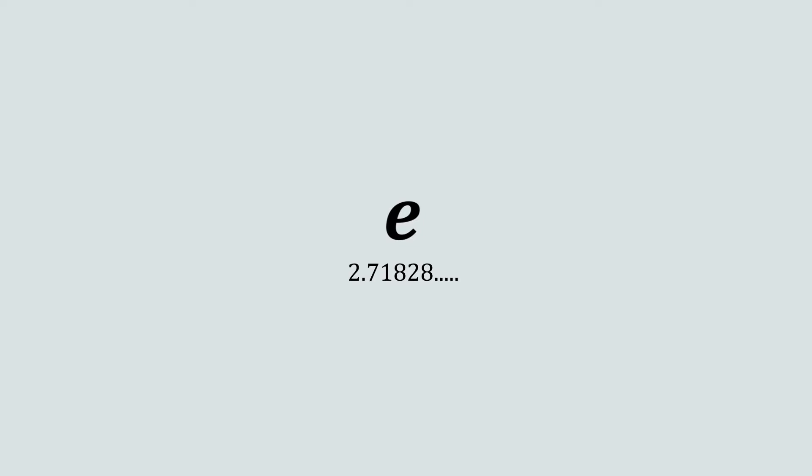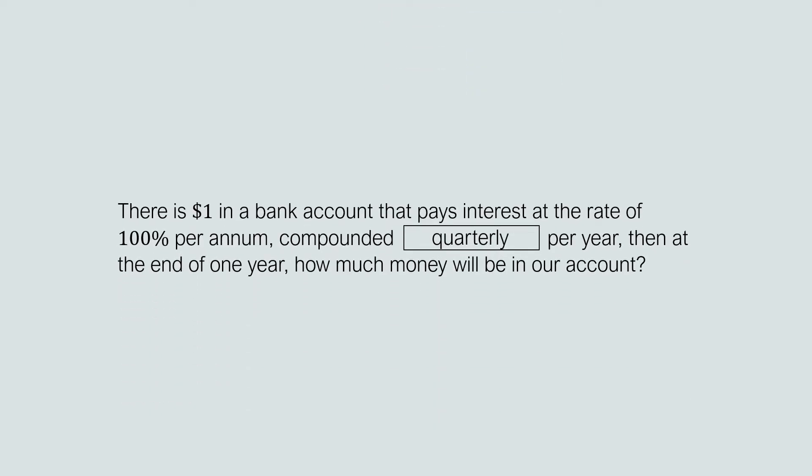The most common definition of E involves the idea of compound interest, and we'll be looking at the original scenario that E was first introduced. Suppose there is $1 in a bank account that pays interest at the rate of 100% per annum compounded quarterly. Then at the end of one year, how much money will be in our account?